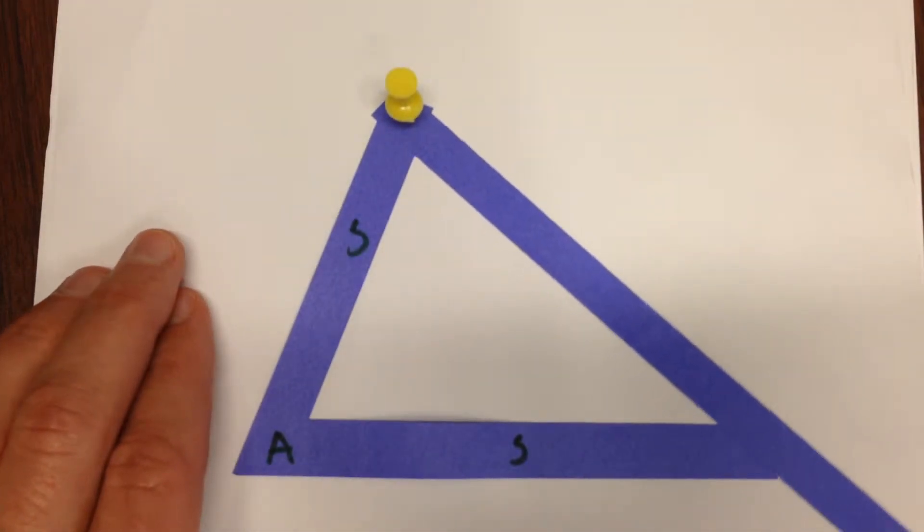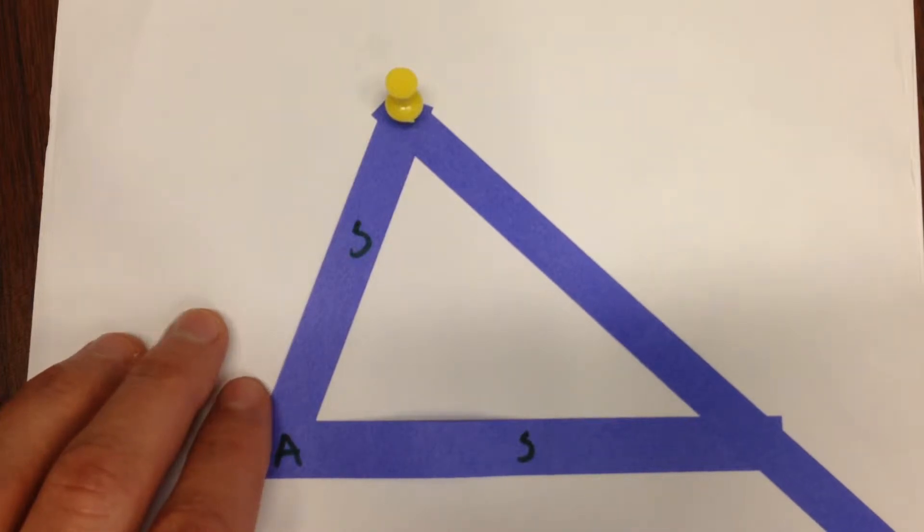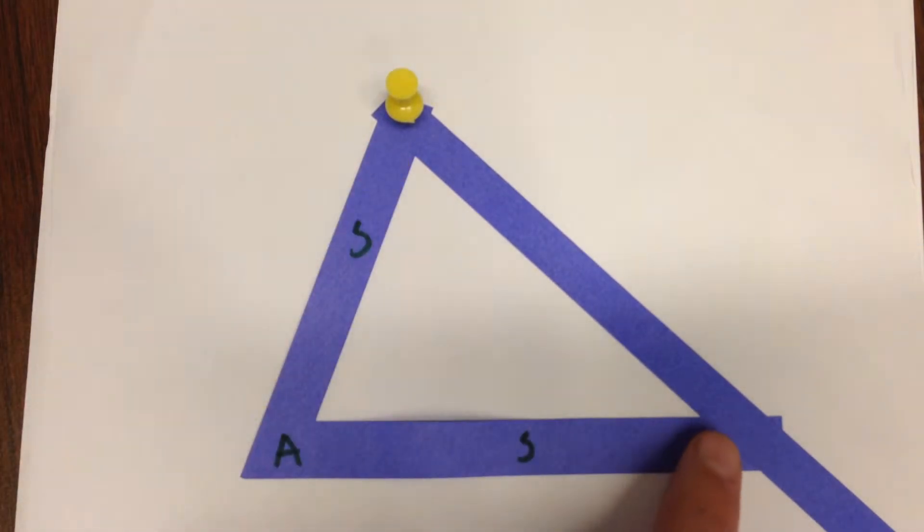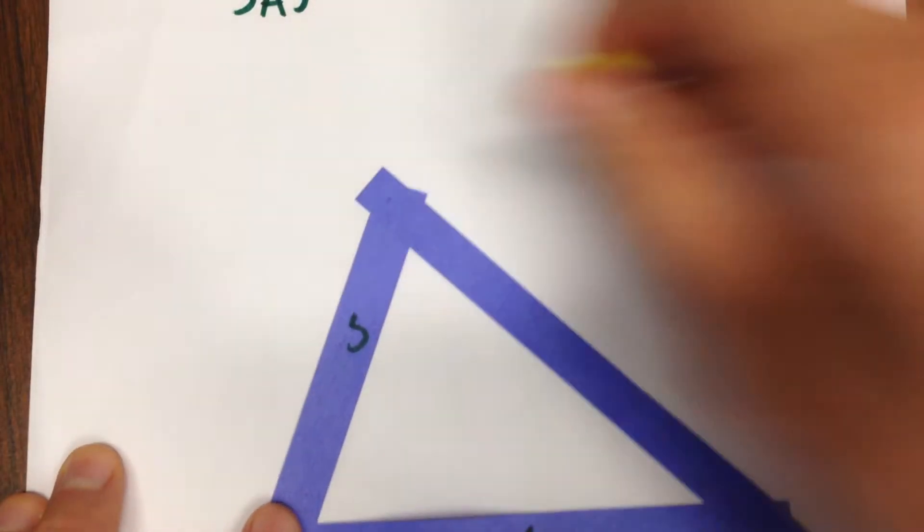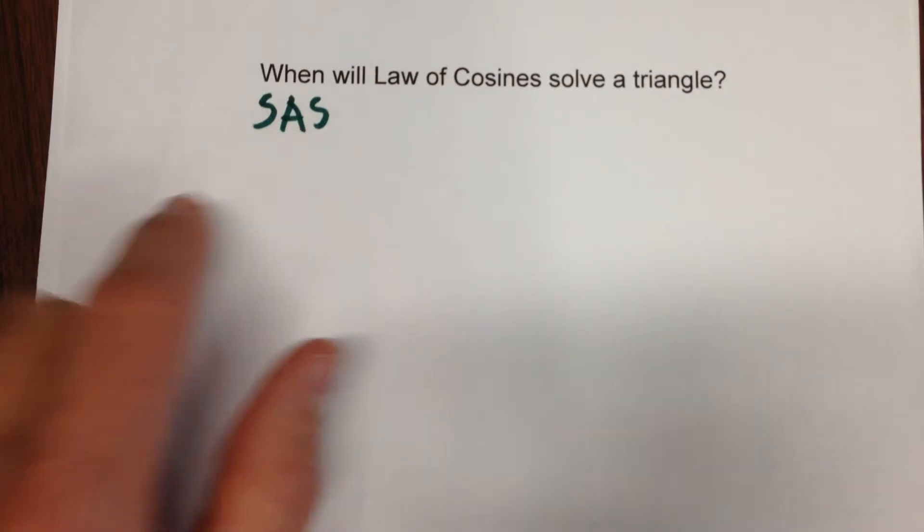So notice what happens is it's forced to connect at that angle which means this angle is determined, this angle is determined, and this side length is determined. In other words the triangle is entirely solved in the side angle side case.